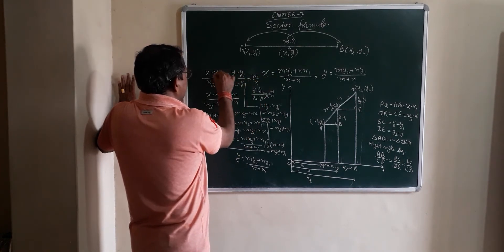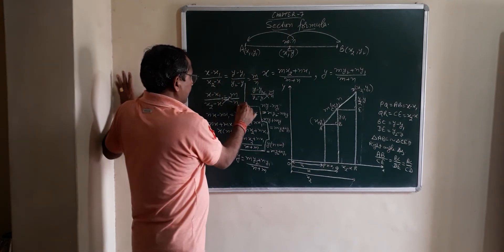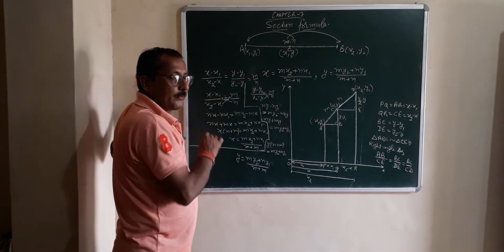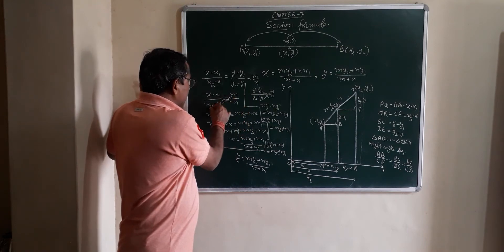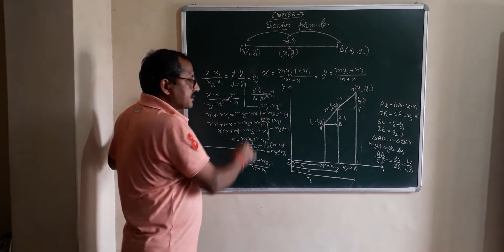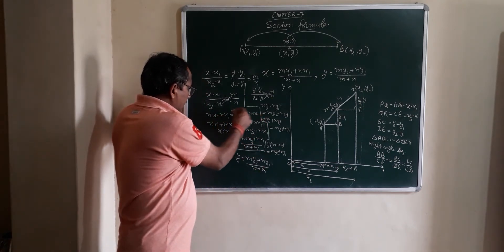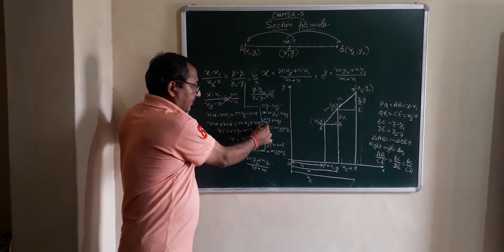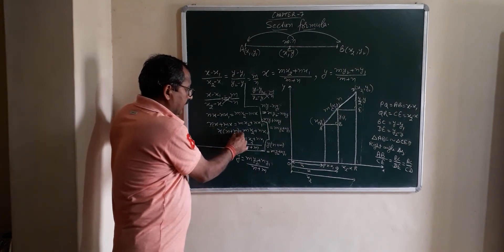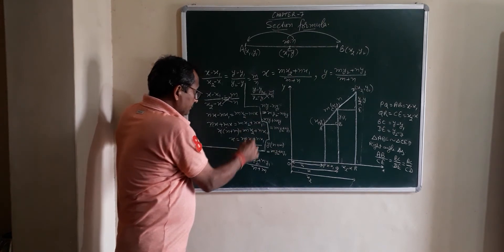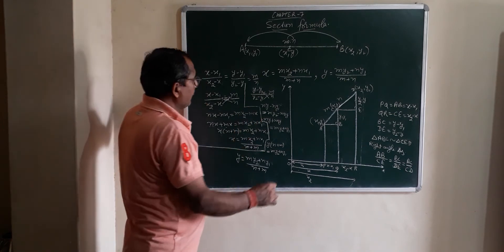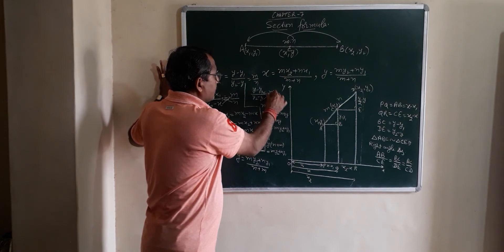X minus X1 upon X2 minus X is equal to M upon N. By the cross multiplication, N X minus N X1 is equal to M X2 minus M X. N X transpose, M X is equal to M X2 transpose N X1. X common, N plus M is equal to M X2 plus N X1. Multiple divide, transpose shifting, M X2 plus N X1 upon N plus M.